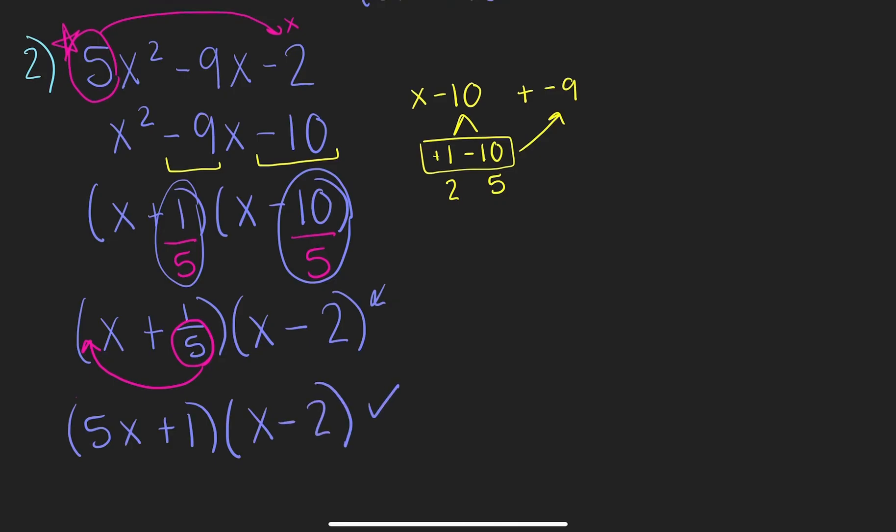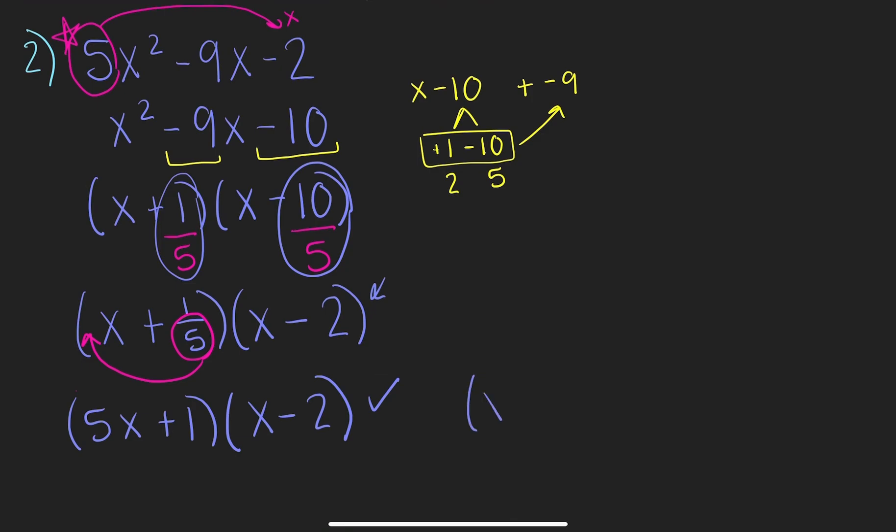If you FOIL that, you can check your work, and you should get back to the problem. And remember, you could always have them swapped too. x minus 2 times 5x plus 1 will get you the same answer.